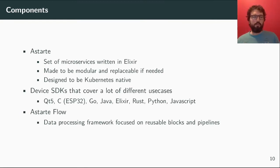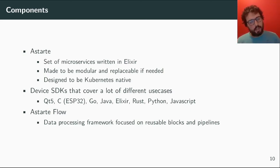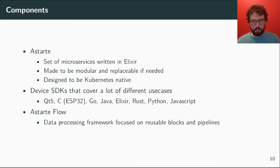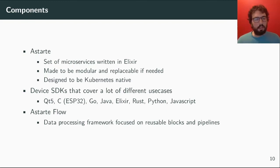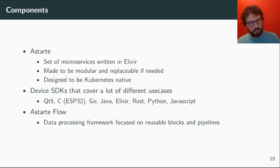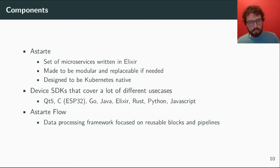What are the components that make up Astarte? Astarte itself is a set of microservices written in Elixir. It's made to be modular and replaceable if needed — each microservice can be replaced with your own implementation. It's designed to be Kubernetes native. There are also device SDKs covering a lot of different use cases: Qt5, C on ESP32, Go, Java, Elixir, Rust, Python, JavaScript, and more SDKs are underway.